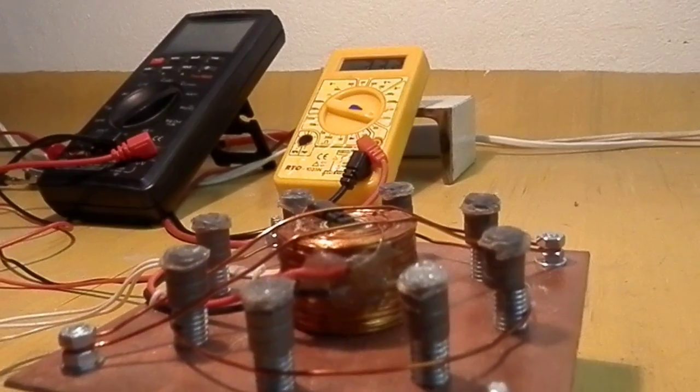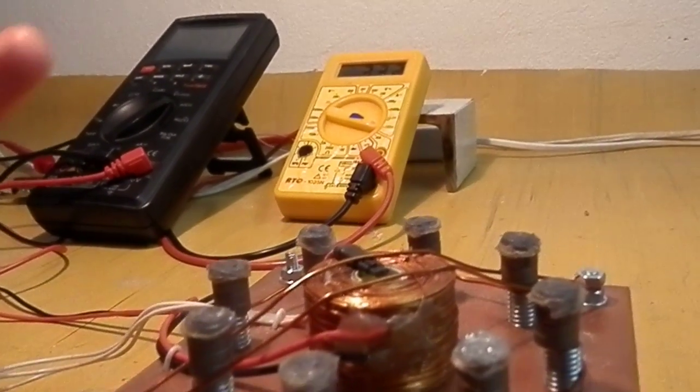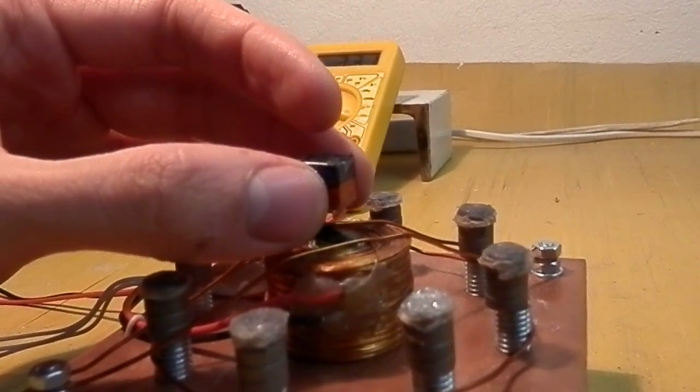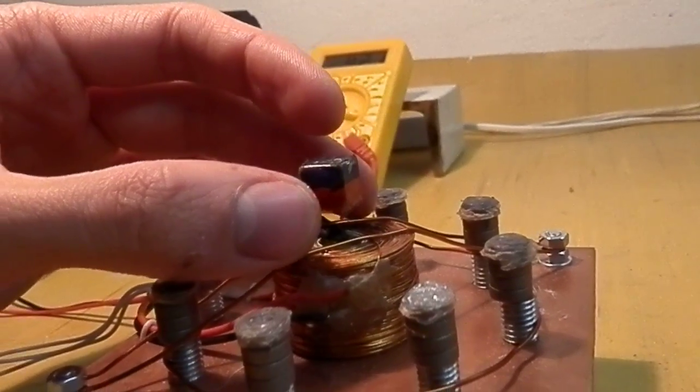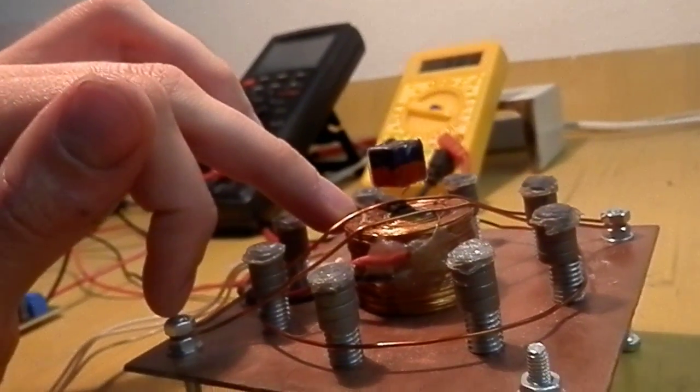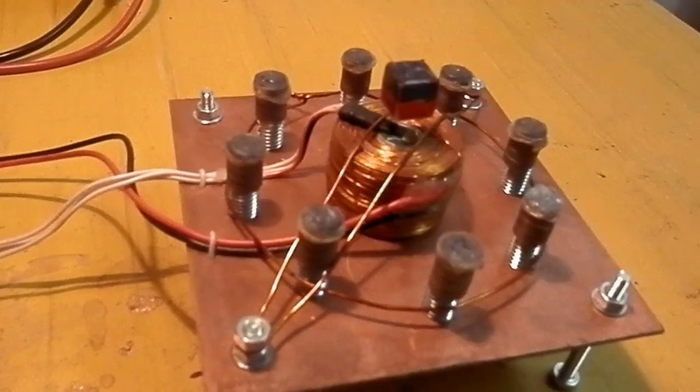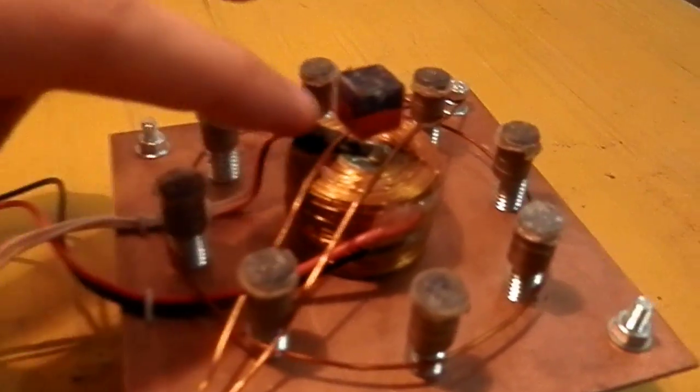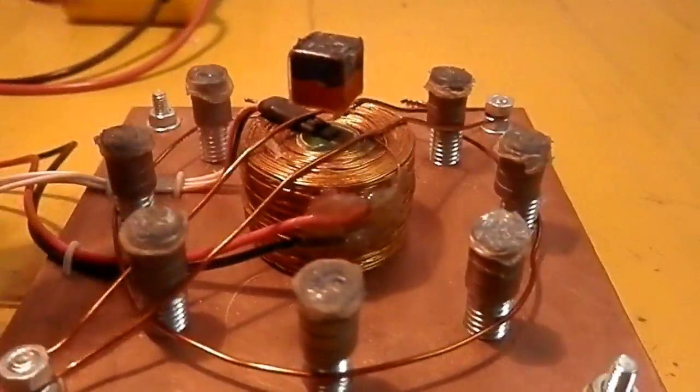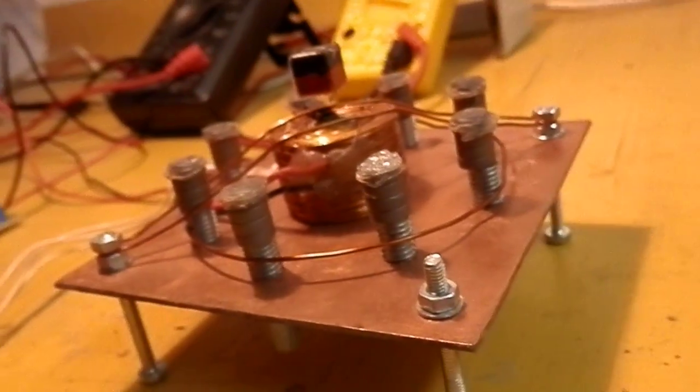When I turn on the electromagnet, it pushes the magnet up so it levitates. The sensor measures the intensity of the magnetic field strength.